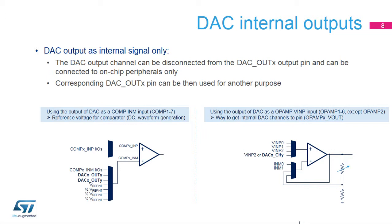The DAC-OUT-X can use an internal pin connection to on-chip peripherals such as comparators and operational amplifiers. Regarding DAC1 and DAC2, the corresponding DAC-OUT-X GPIO can be used for another purpose. Connecting the internal DAC output to a COMP-IN-M input defines the reference voltage of the comparator. Connecting the internal DAC output to an op-amp VIN-P input can be used to bias the op-amp DC point or amplify the analog voltage. It is also a way to get internal DAC channels to pin, which can be useful for DAC3 and DAC4.